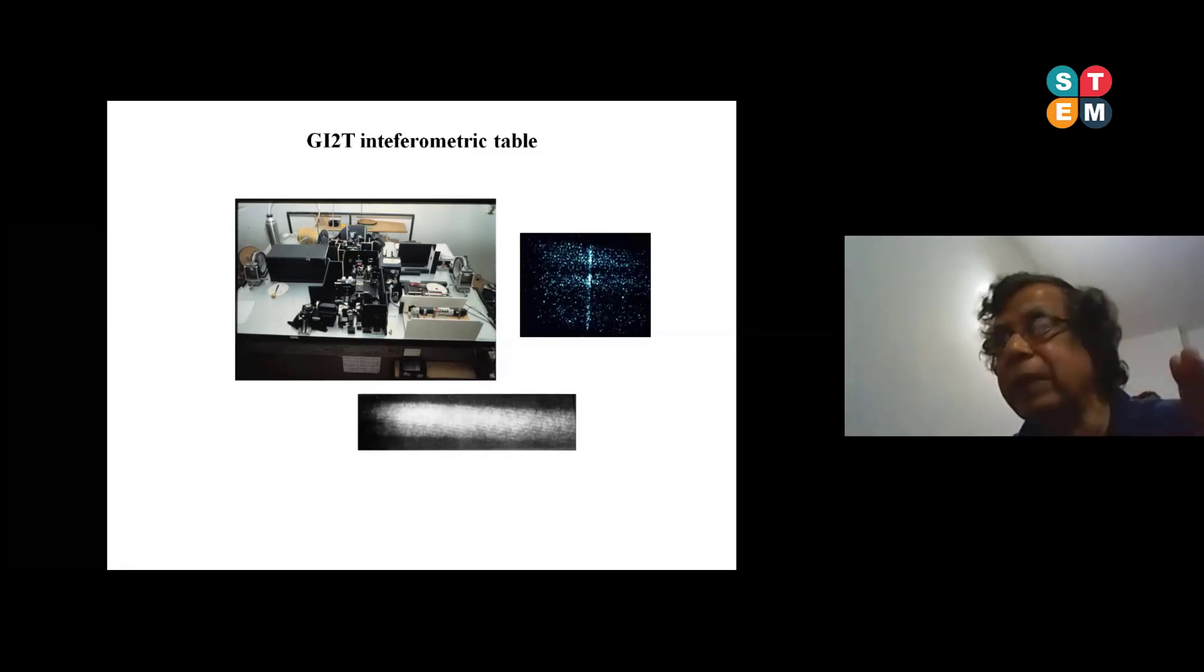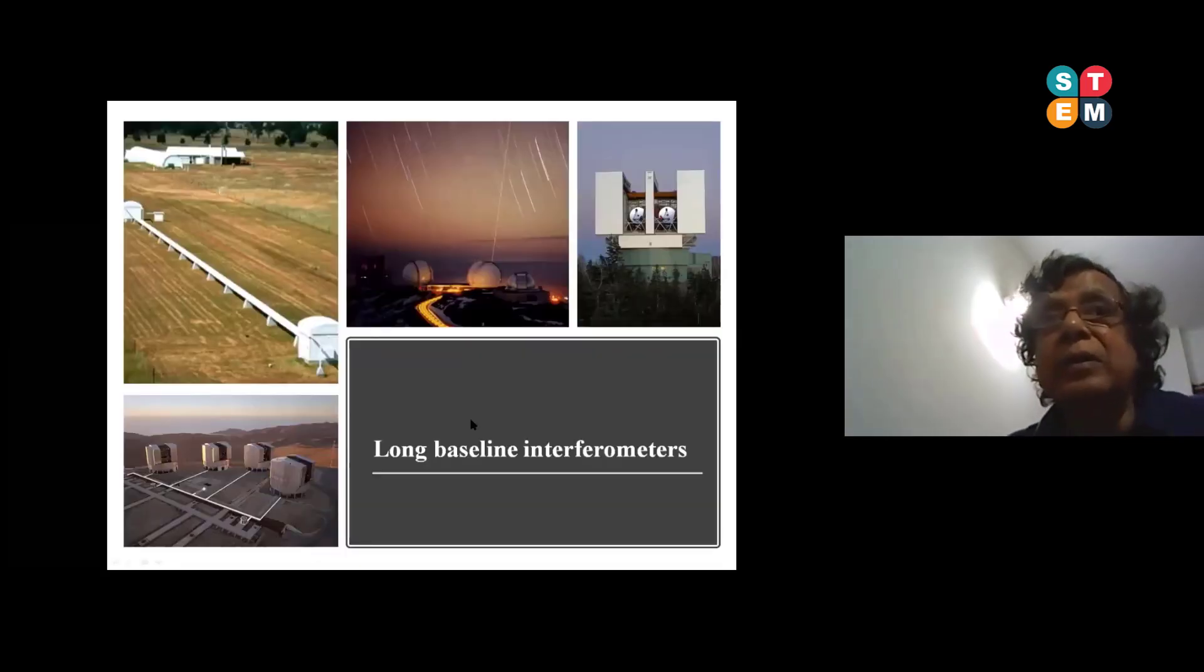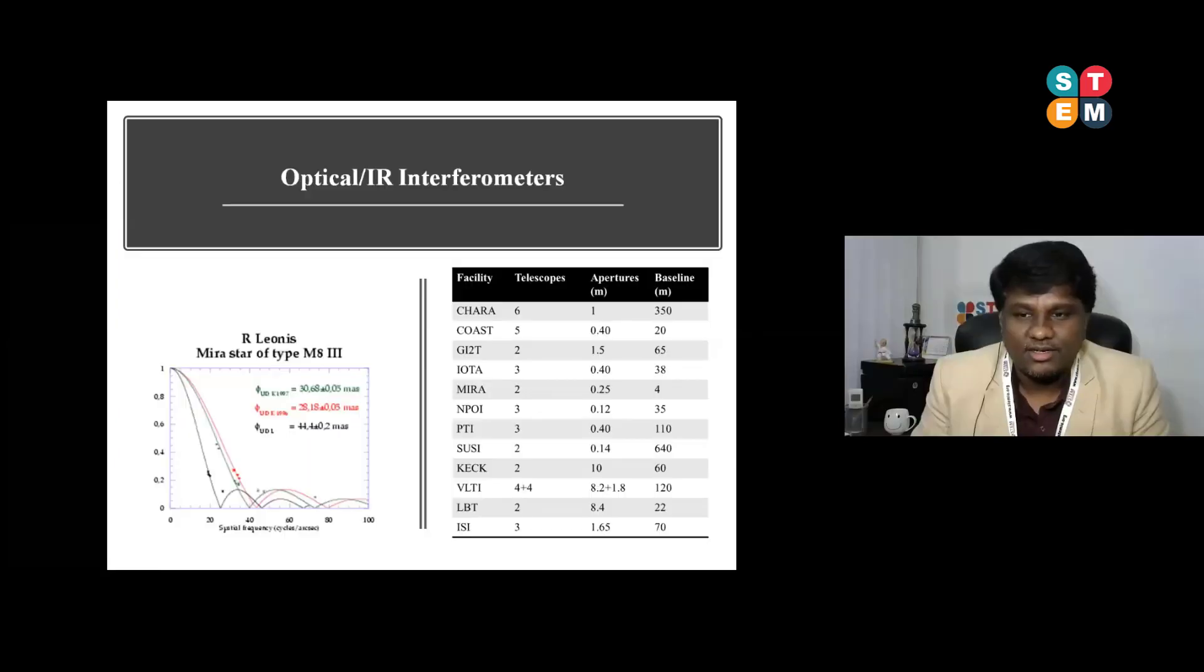Afterwards many people started building telescopes. This is Sydney University Stellar Interferometer which is a forerunner of VLTI interferometer. This is the Keck telescope. This is a binocular telescope where it will have plenty of UV coverage.